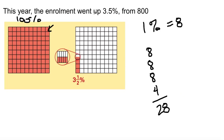So enrollment increased 3.5%, and in real numbers, that is an increase of 28 students. So essentially, every square here represents 8 students.